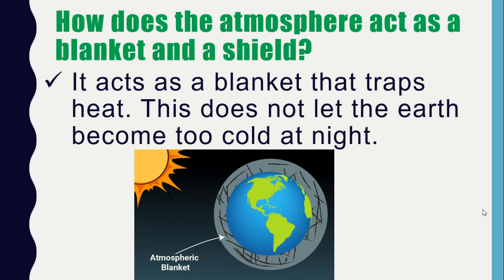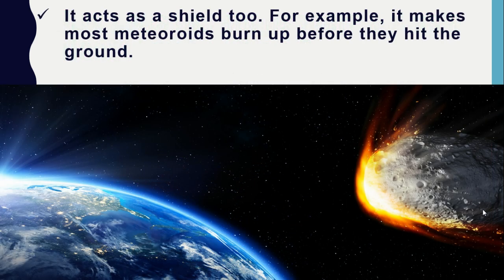The atmosphere makes the Earth livable in many other ways — it acts as a blanket and a shield. It acts as a blanket that traps heat, which does not let the Earth become too cold at night. It also acts as a shield; for example, it makes most meteoroids burn up before they hit the ground.